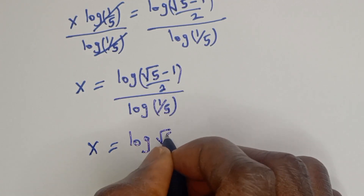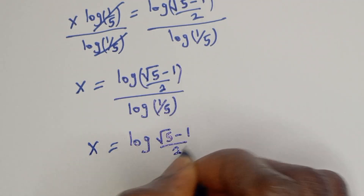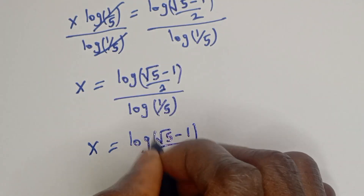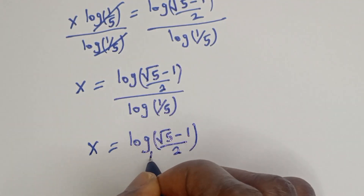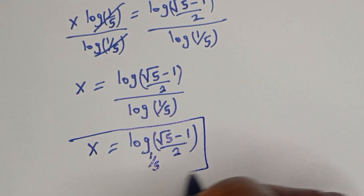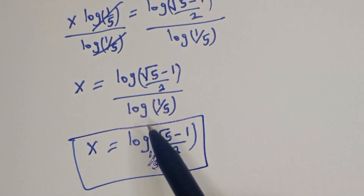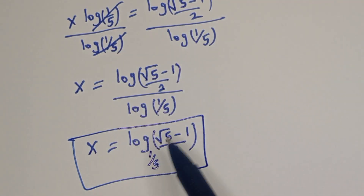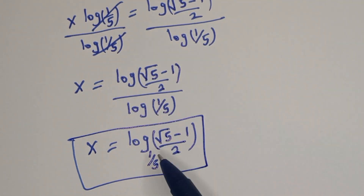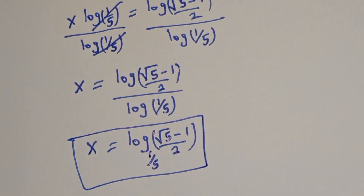The final answer is s equals log((root 5 minus 1)/2) over log(1/5). I hope you enjoyed the video. Please don't forget to like, share, comment, and subscribe to my channel. Thank you, bye bye.